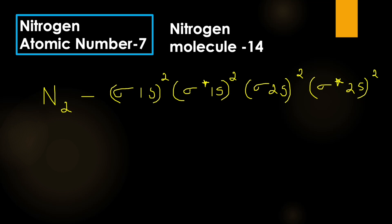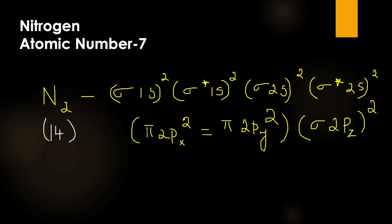So we can write the molecular orbital configuration for nitrogen molecule: sigma 1s2, sigma star 1s2, sigma 2s2, sigma star 2s2, pi 2px2, pi 2py2, sigma 2pz2.